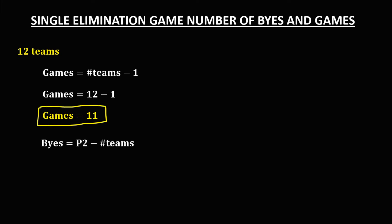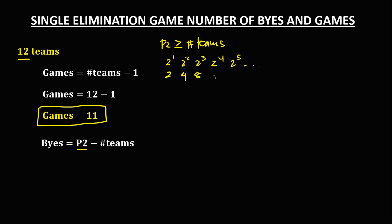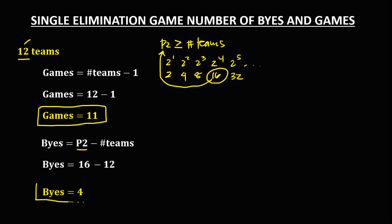To find the number of byes, we look at the power of 2. Since the total number of teams is 12 and the power of 2 must be greater than or equal to the number of teams, we check: 2¹ = 2, 2² = 4, 2³ = 8, 2⁴ = 16, 2⁵ = 32. Since 16 is the smallest power of 2 greater than or equal to 12, we use 16. So the total number of byes is 16 minus 12, which equals 4.